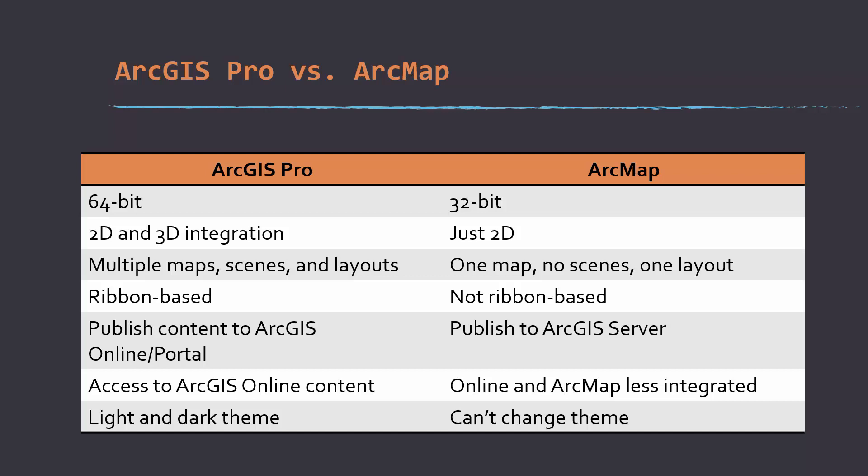You have access to your ArcGIS Online content in ArcPro as long as you're logged in with your account. So you can stream in, for example, data you have stored there or base maps that you've created. There's less integration between ArcMap and ArcGIS Online. One thing I like is that ArcGIS Pro supports both a light theme and a dark theme, whereas ArcMap didn't really have the ability to change themes.